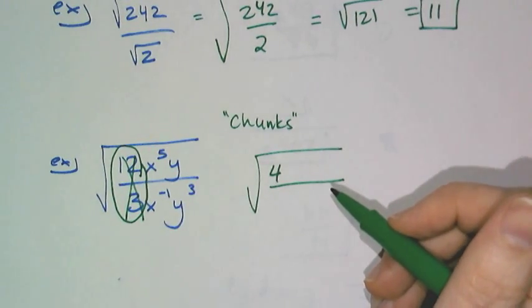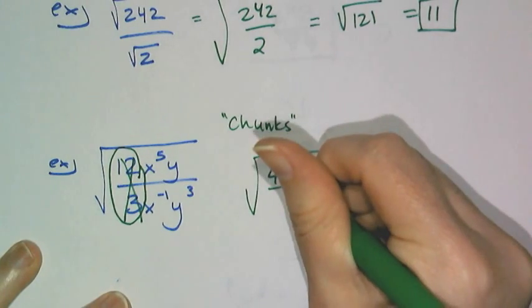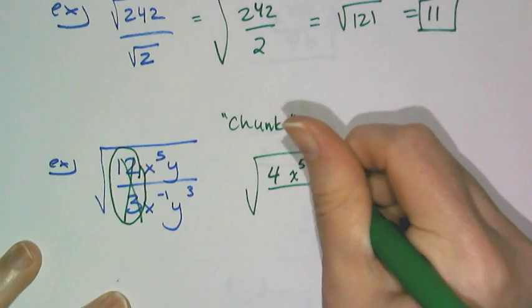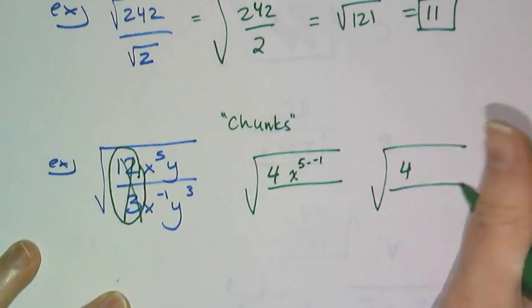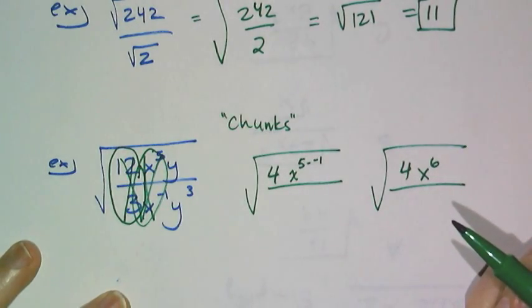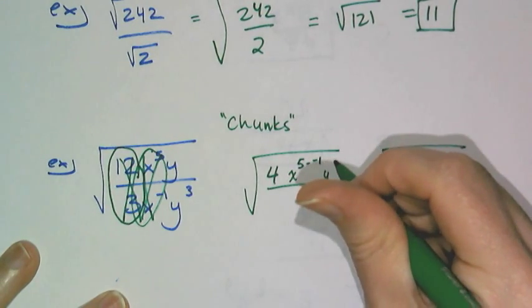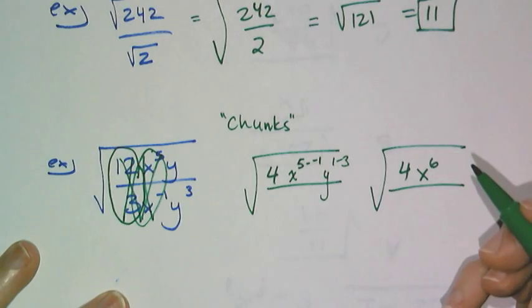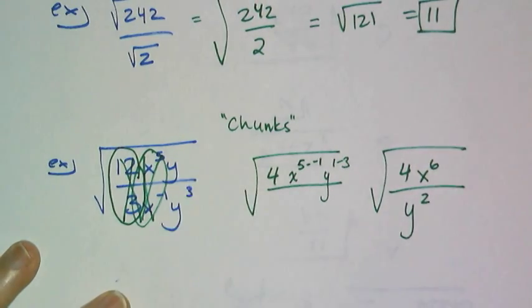And then x to the fifth over x to the negative 1 is 5 minus negative 1, or x to the sixth. So the x's are taken care of. And then y over y third is y to the 1 minus 3, which is y to the negative 2 power, which means it's y squared down there.